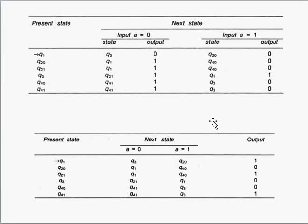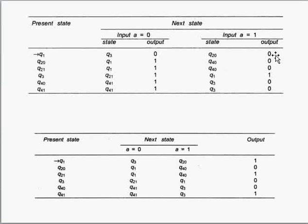Now to determine the output for each state in the Moore machine, we analyze the naming convention. In every occurrence of q1, the output is 1. q2_0 has output 0 by definition. q2_1 has output 1. q3 has output 0 in all occurrences — q3/0. q4_0 has output 0 and q4_1 has output 1. These outputs are assigned directly as the state outputs in the Moore machine.